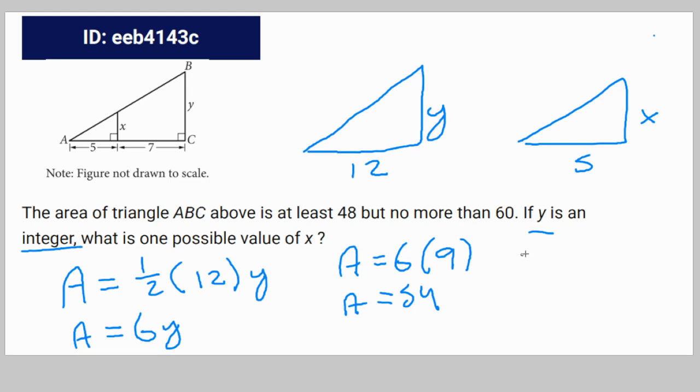So now we're left with this new ratio between the triangles. 9 over 12 is equal to x over 5. Solving for x, we get 45 over 12 is equal to x, which is one possible answer.